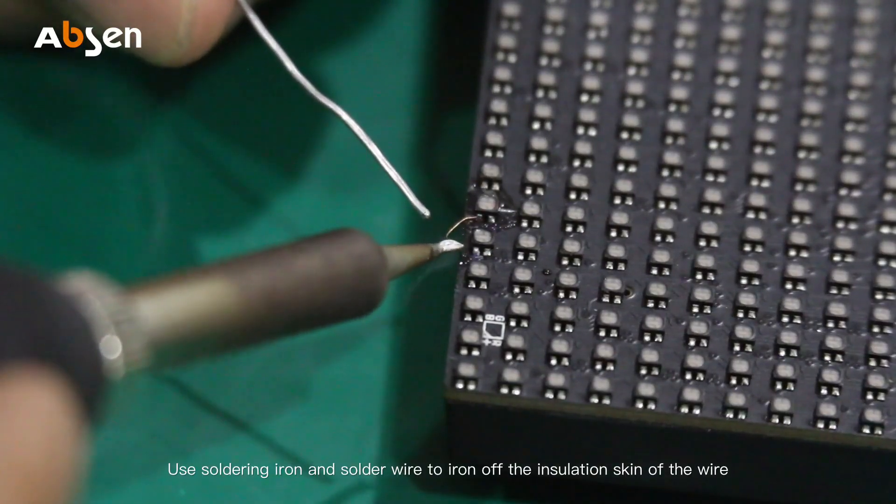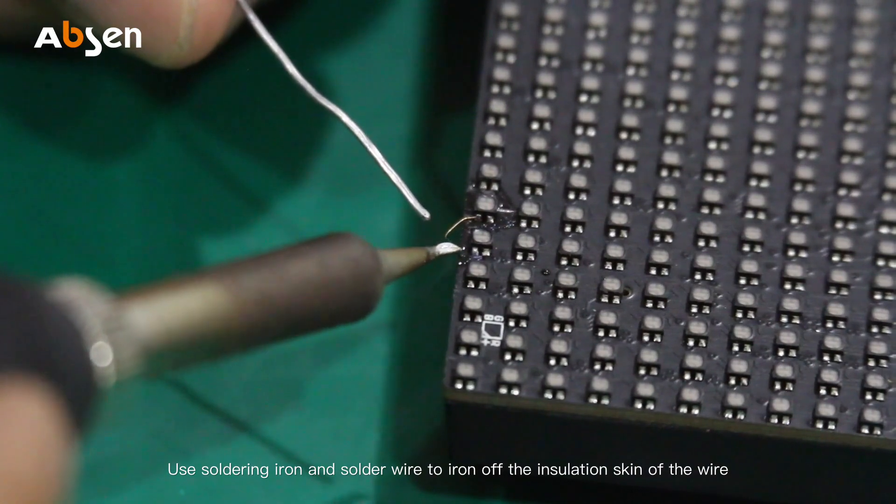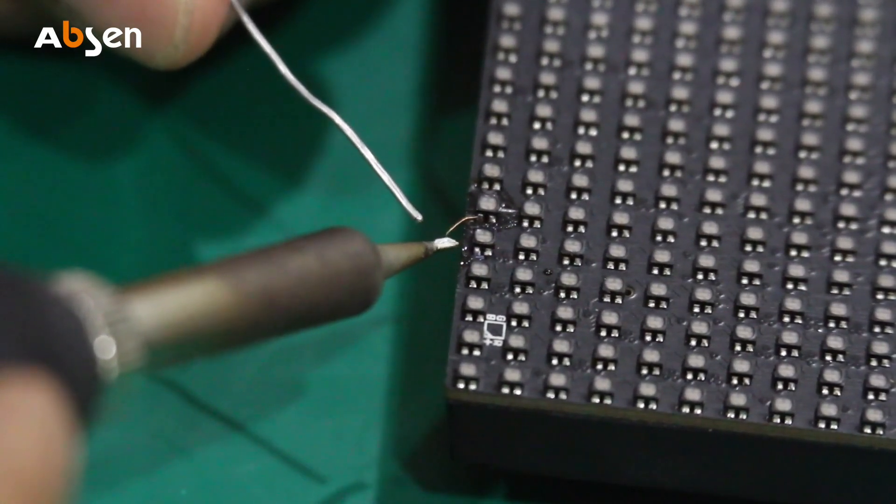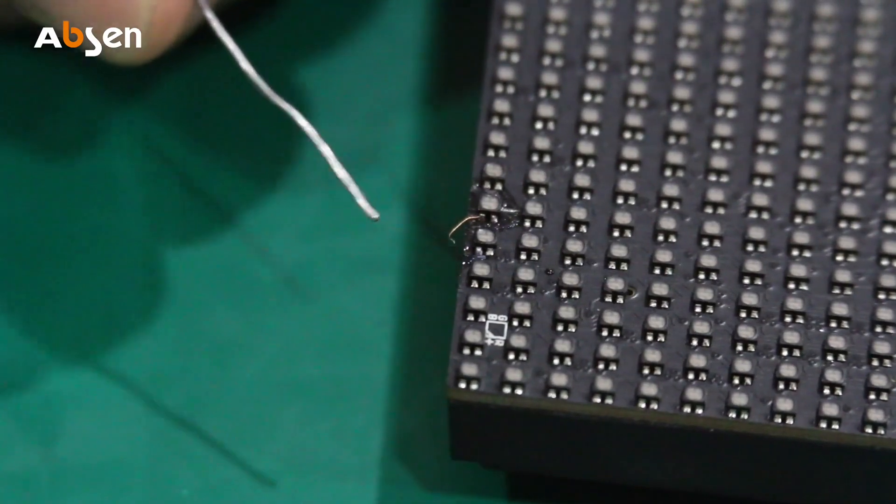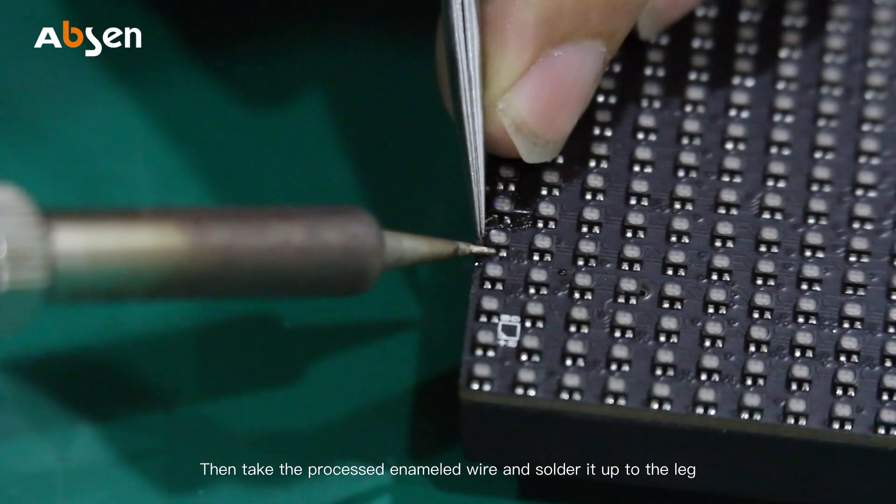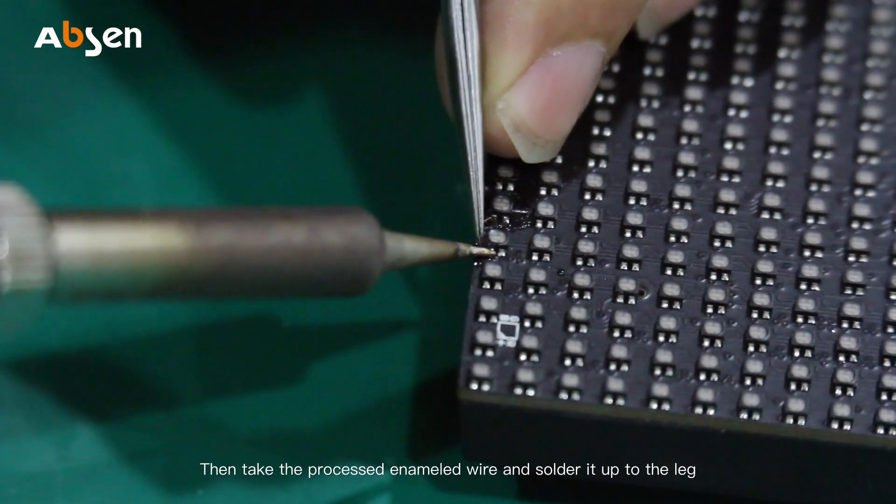Use soldering iron and solder wire to iron off the insulation skin of the wire. Then take the processed enameled wire and solder it up to the leg.